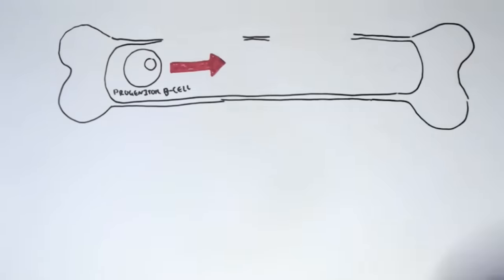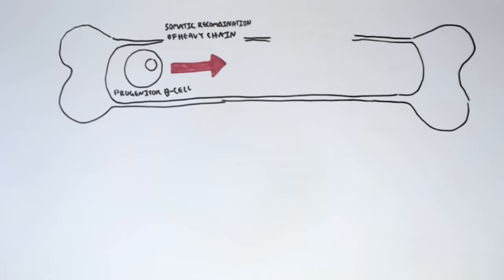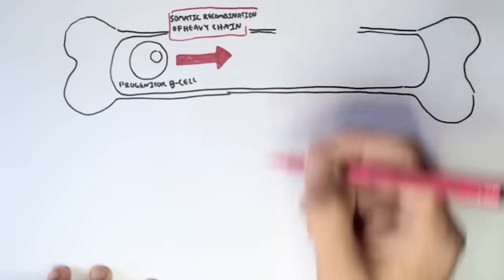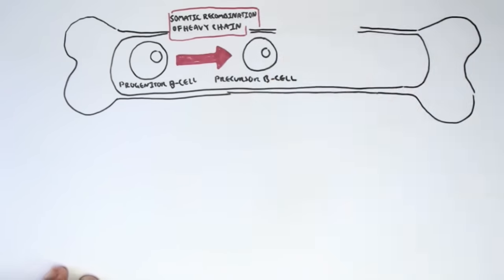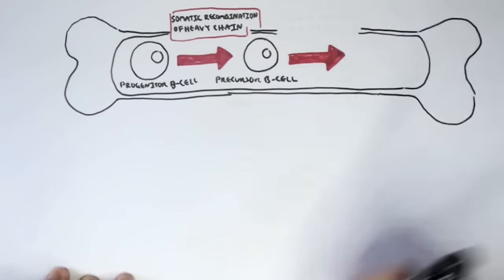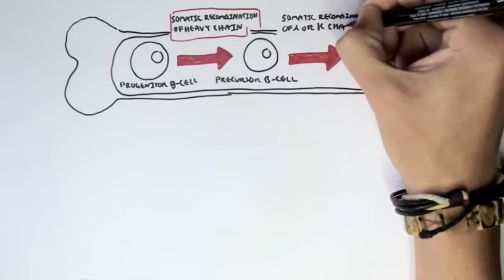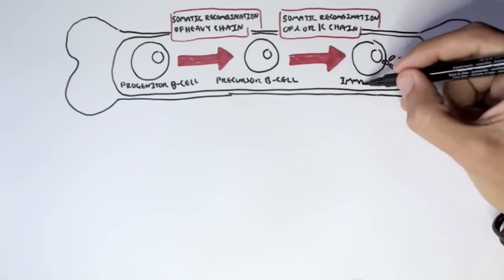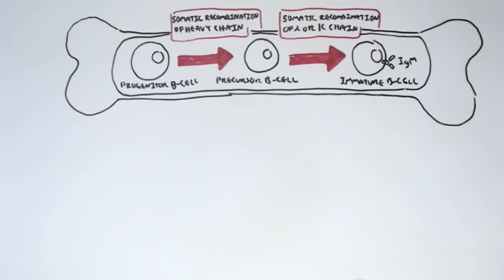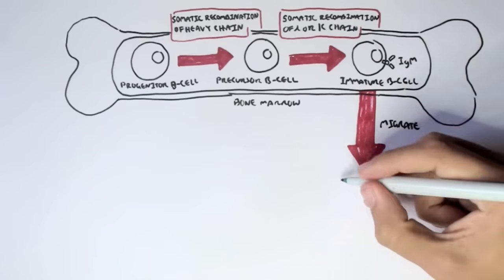A progenitor B cell, through somatic recombination of the heavy chain first, will make a precursor B cell. A precursor B cell will then undergo a second somatic recombination of the kappa or lambda light chain, which will essentially create a unique antibody — usually an IgM class, immunoglobulin M class — immature B cell.